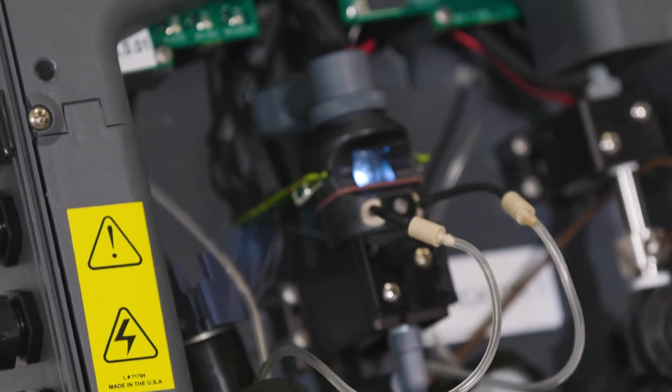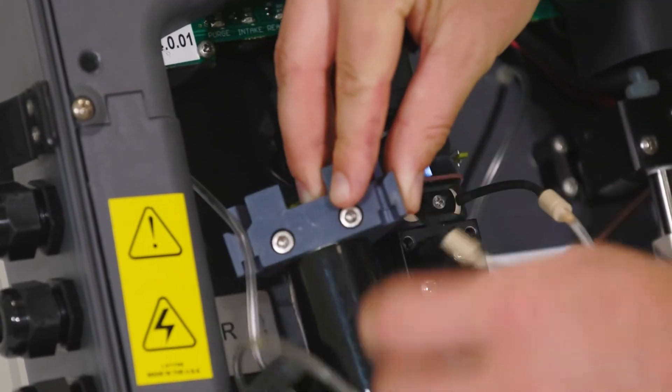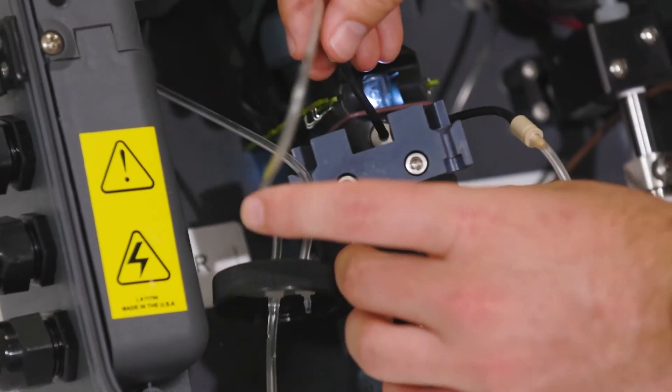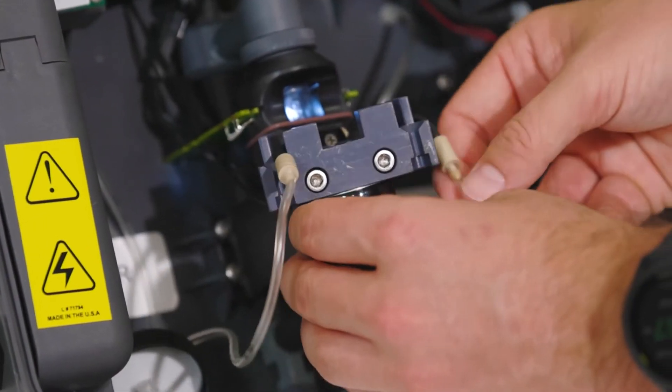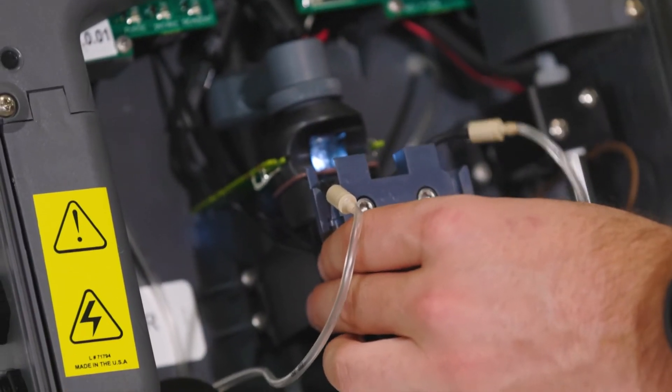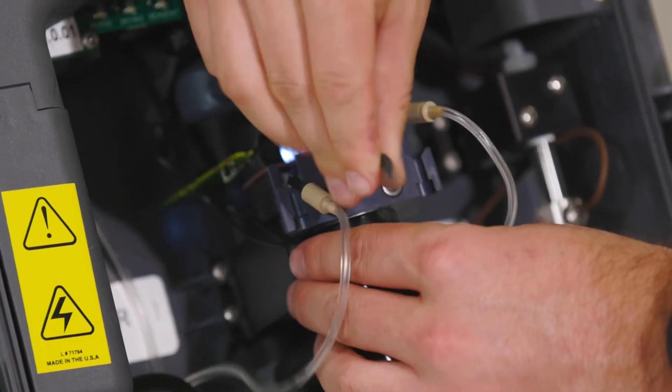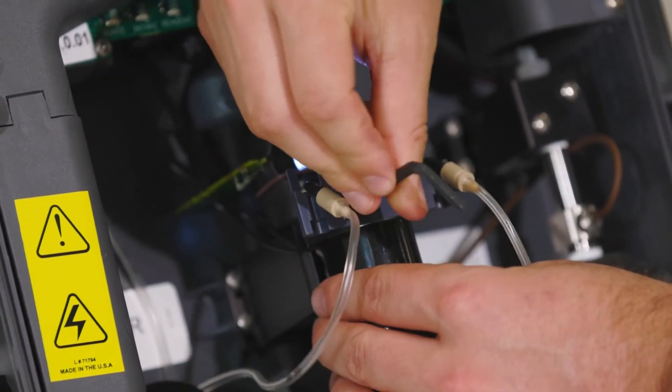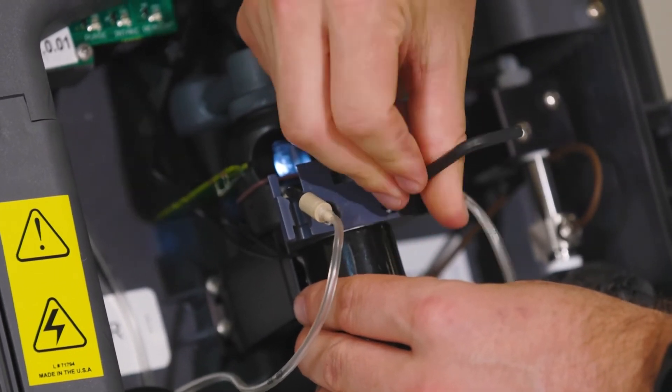We're now ready to reinstall our reagent pump. Take the reagent pump. It needs to come underneath both of these lines. Drape them where they're supposed to go. Then you need to hold it in place and take your Allen wrench.